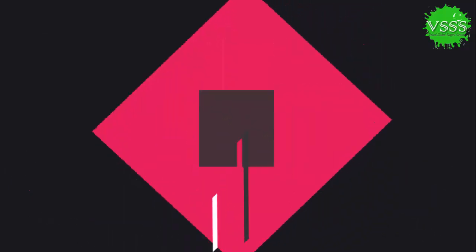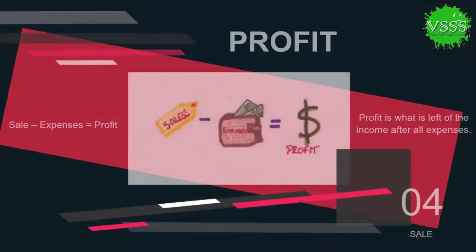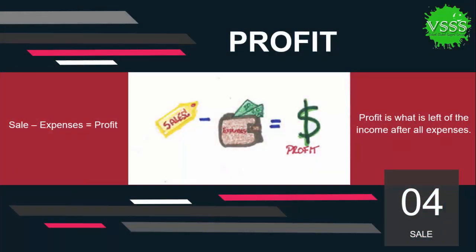Another concept that we have discussed is expenses. Expenses are the costs incurred to earn revenue or sale. The last concept in our today's session is profit. Profit is what is left of the income after meeting all expenses. Simply, the excess of income over expenses is also known as profit. The formula for calculating profit is: sales minus expenses equals profit.